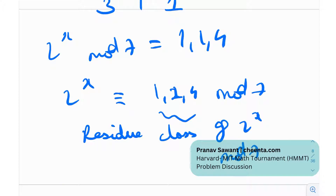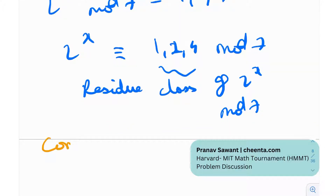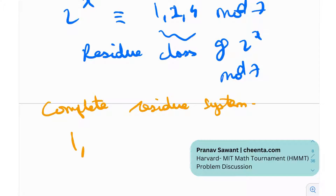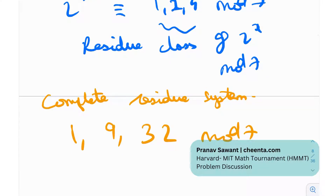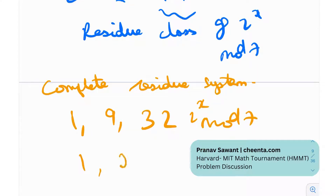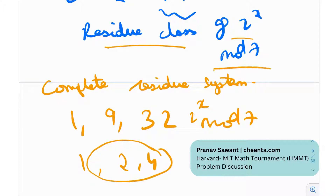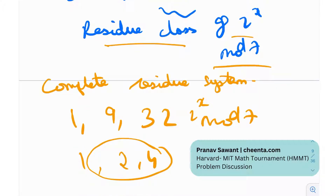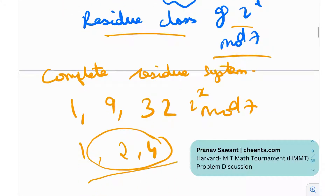Now, what is a complete residue system? For example, the numbers 1, 9, and 32 form a complete residue system mod 7 with respect to the residue class of 2^x, because when you divide each by 7 you get remainders 1, 2, and 4, which are exactly the elements of that residue class. The elements of a complete residue system must cover all values in the residue class when taken mod 7.